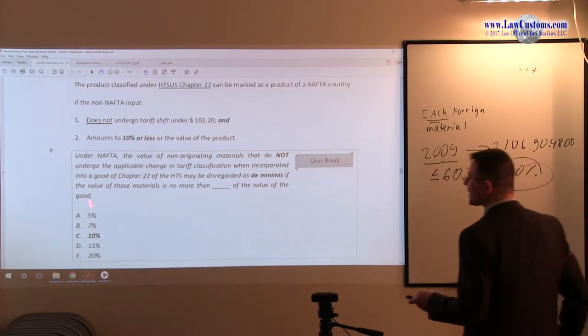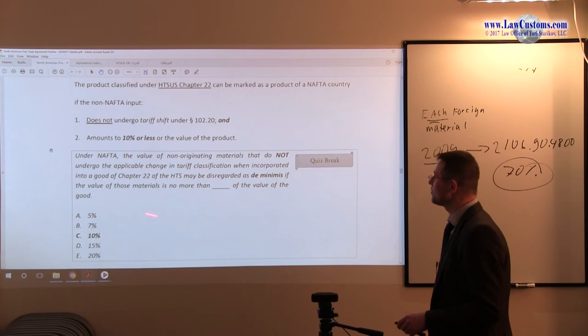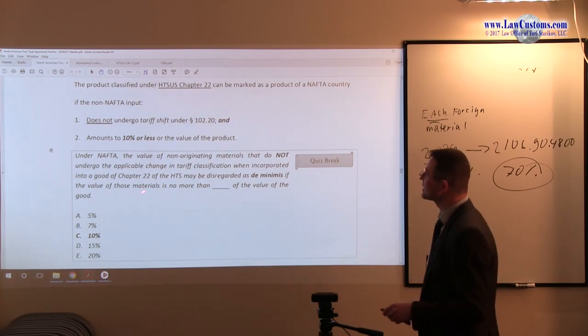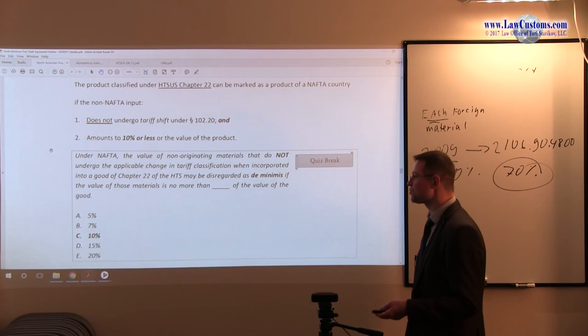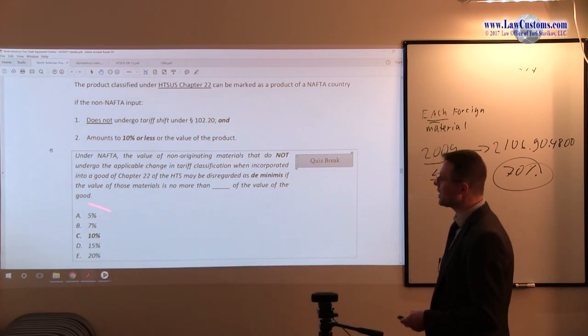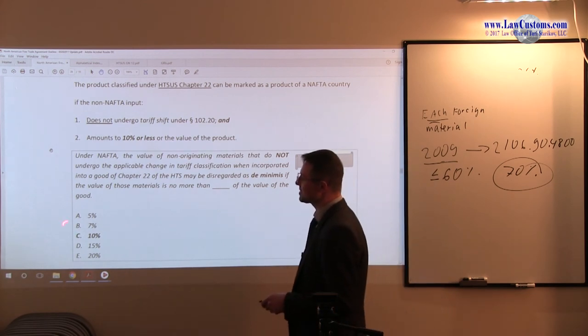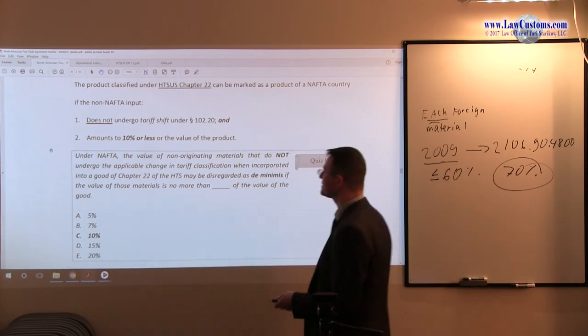Here is the way they asked about it. Under NAFTA, the value of non-originating materials that do not undergo the applicable change when incorporated into the good of Chapter 22—so immediately think exception—may be disregarded as de minimis if the value of the materials is no more than... and 10% is the key. So 10% or less, or no more than 10%, is the right answer. All the other percentages are not applicable. So the answer would be B. Do not be fooled—Chapter 22 is an exception, so keep that in mind.